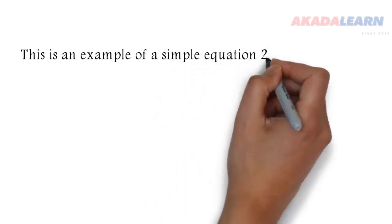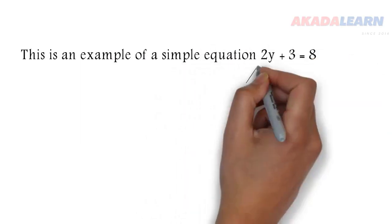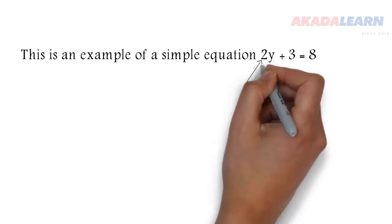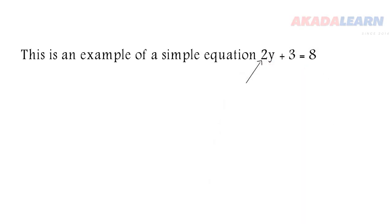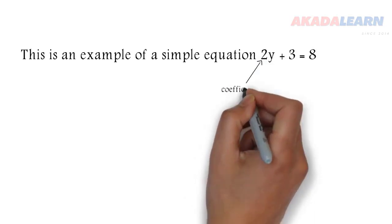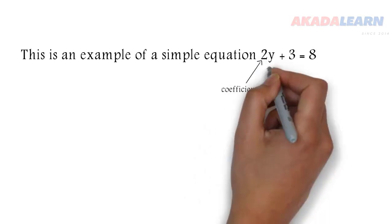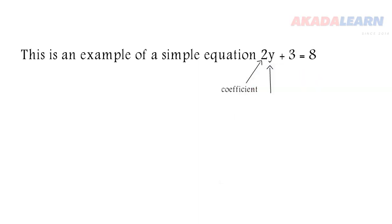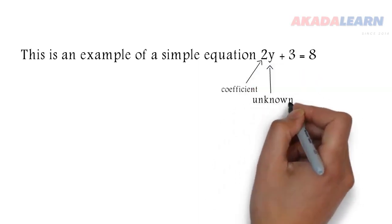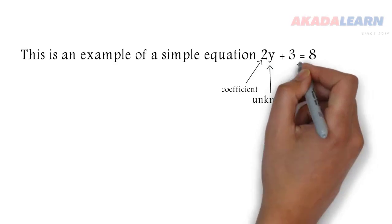We have an equation there: 2y + 3 = 8. The 2 right there is called the coefficient of y. Variable y is our unknown which we are going to be required to find out, and that symbol there is the equality symbol.